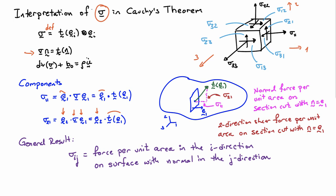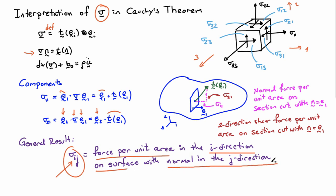Each component of the stress tensor, sigma ij, corresponds to a force per unit area in the direction associated with the first index. The second index is the section cut we're looking at, and the first index is the force direction. We can see now that the tensor sigma that appears in Cauchy's theorem is correctly interpreted as the stress tensor that we normally see in mechanical theories.